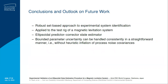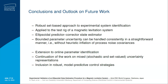Now let's come to a conclusion and an outlook on future work. In this presentation, we have seen firstly a robust set-based approach to experimental system identification. This experimental system identification has provided us with interval bounds for uncertain parameters in the assumed force and time constant characteristics, which depend for the magnetic levitation system on the position variable x. Moreover, this has been the input for the implementation of the ellipsoid predictor-corrector state estimation procedure, with which we can handle bounded uncertainty in a straightforward manner — that means without heuristically tuning the process noise covariances. In future work, we will extend this approach to an online identification of system parameters, continue our work on mixed stochastic and set-valued uncertainty representation, and finally include the outcomes in a robust model predictive control strategy.